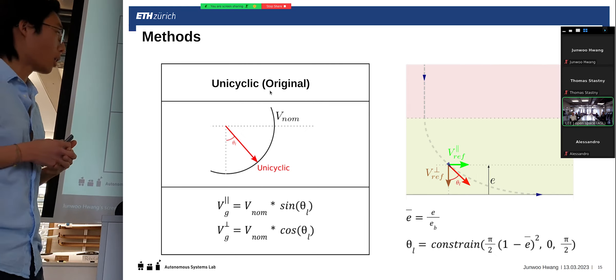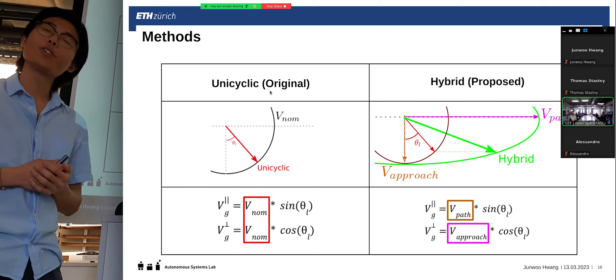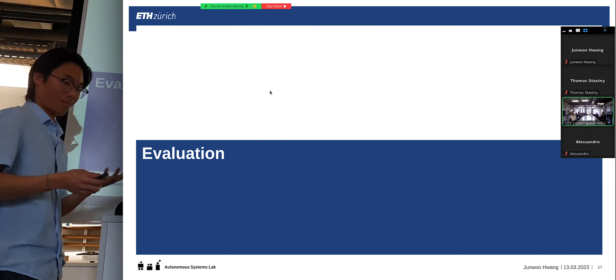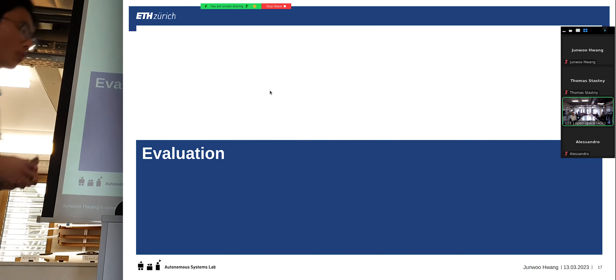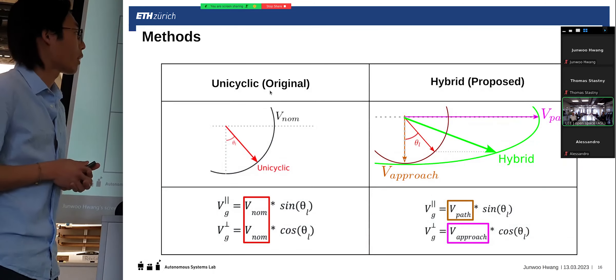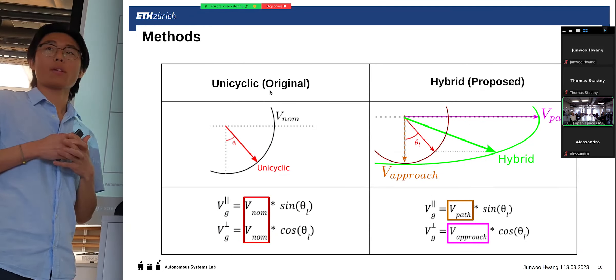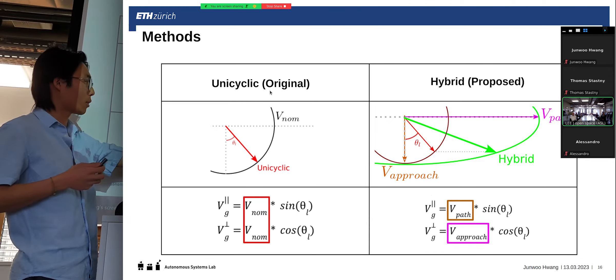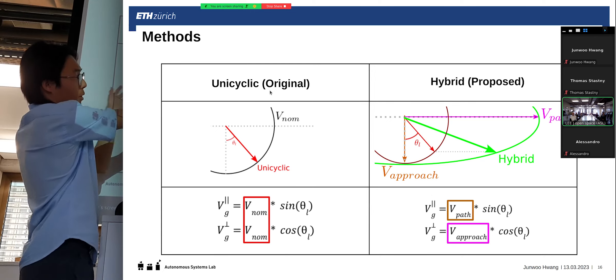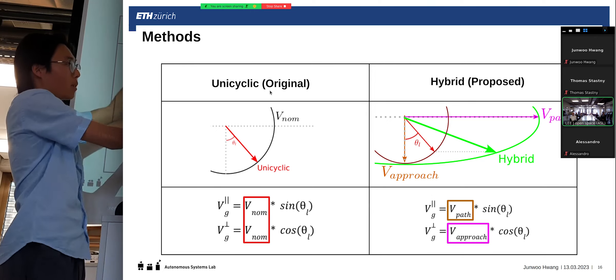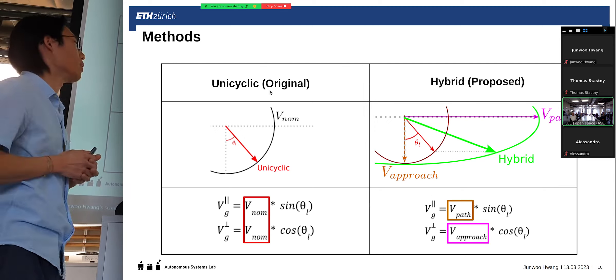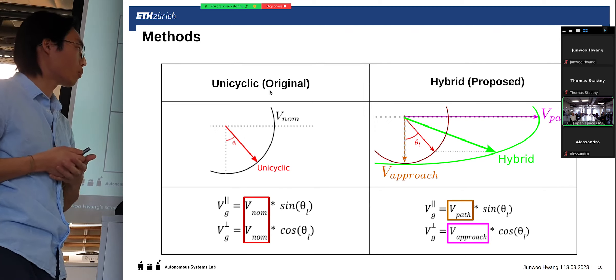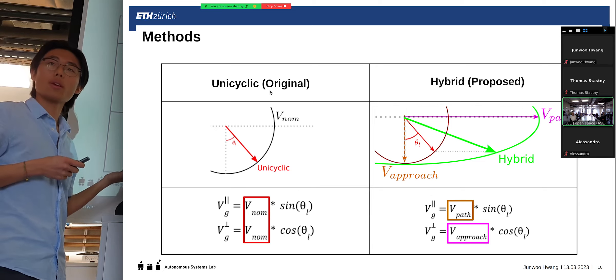However, what I am approaching in this thesis is the hybrid approach, where we can have orthogonally decoupled path and approach speed. So, what this allows is, we can maintain the look-ahead angle as is before. However, we can stretch this circle into an ellipse in any direction, so we can achieve any defined path of the approach, and thus, we can extend it to the multirotor case.